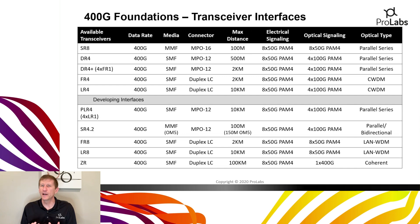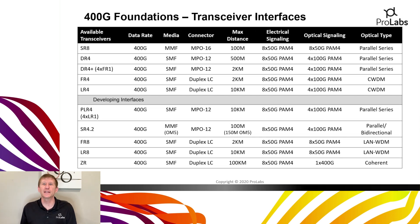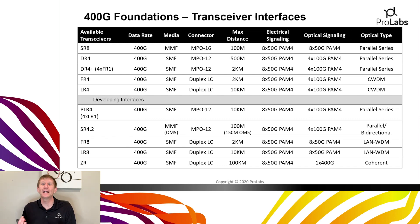The 400Gig ZR is something you'll see come to market over the next year. This is a 1x400 gig coherent DWDM technology — pretty exciting, and a real change for long-haul networking. From the core to the edge, this is going to be a big change over the next year or so.